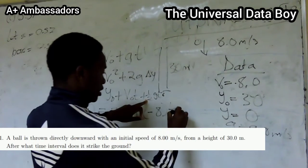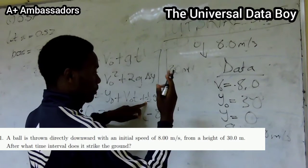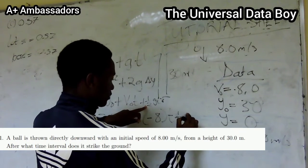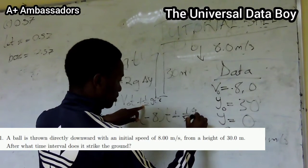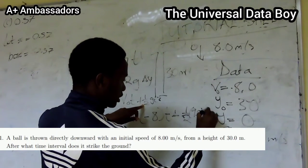We have our V₀ being equal to negative 8t. Then we're taking up as positive, so this will be negative. We have negative ½ × 9.8t².